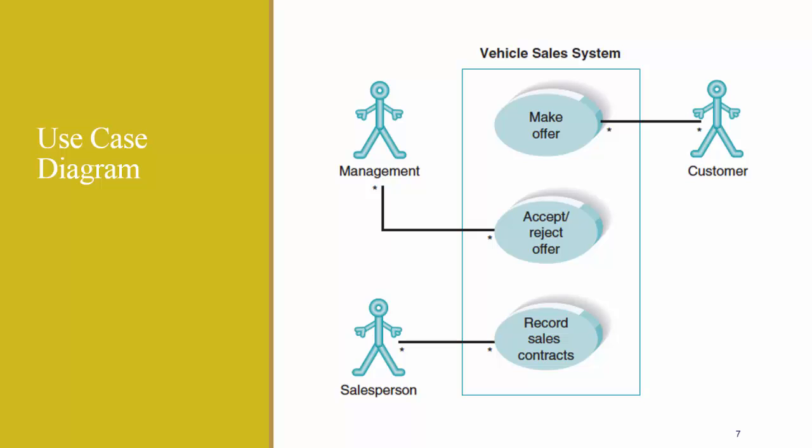Here's an example of a Use Case Diagram. The actors, which are the same actors as in a written textual use case, are the stick figures that interact with the system. Management, a customer, or a salesperson could be actors in your use cases. The system boundary is the box around your use cases. These circles here represent individual use cases, so you'd have a Make Offer Use Case, an Accept or Reject Offer Use Case, and a Record Sales Contract Use Case. The association relationship between the actors and the use cases show that an actor can take part in a use case many times, and a use case can be related to many actors. This is what these asterisks mean.